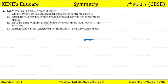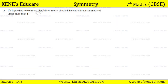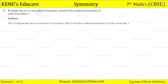So students, question number three: if a figure has two or more lines of symmetry, should it have rotational symmetry of order more than one? Yes — if a figure has two or more lines of symmetry, then it will have rotational symmetry of order more than one.